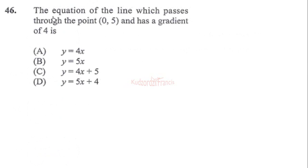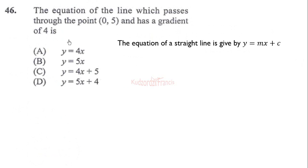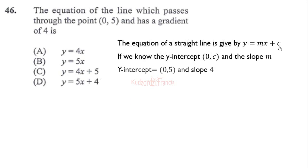Question 46: the equation of the line which passes through the point (0, 5) and has a gradient of four. The equation of a straight line is y = mx + c, where m is the gradient and c is the y-intercept. Comparing with the given values, c equals five and m equals four. Plugging in gives y = 4x + 5. The correct choice is option C.